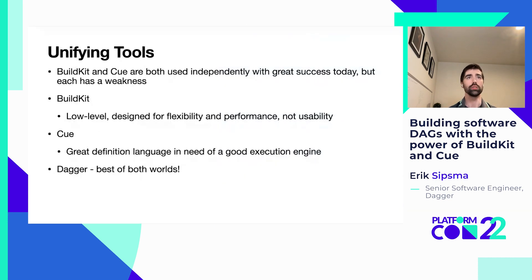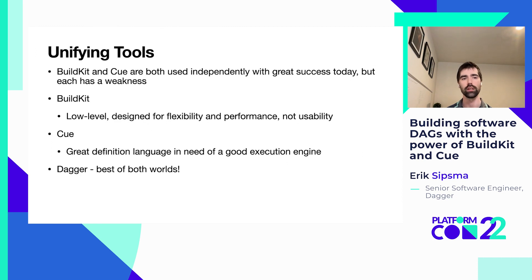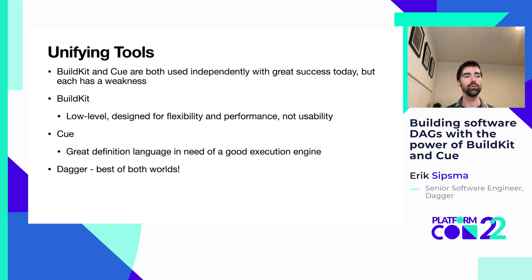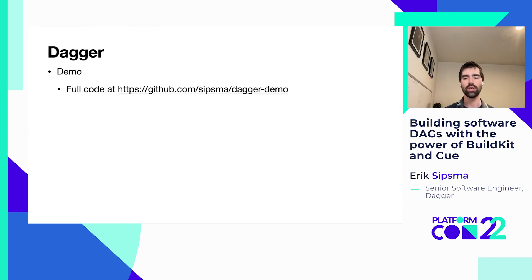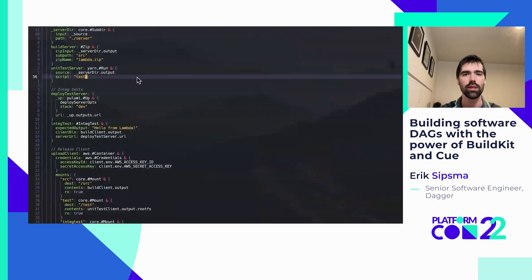BuildKit and CUE are both used independently and they're both awesome, but they both by design have weaknesses. BuildKit is very low level — designed for performance, not usability, kind of like an assembly language. CUE is a great way to create abstractions, but it doesn't have all of those really advanced caching features of BuildKit. So the idea of Dagger is to use CUE as the interface, with CUEflow as the bridge down to BuildKit. CUE is the higher level, BuildKit is the lower level. The best way to really show that off is just a quick demo.